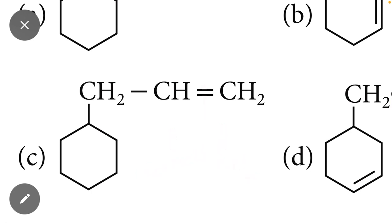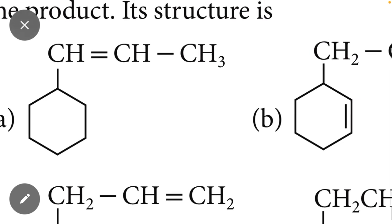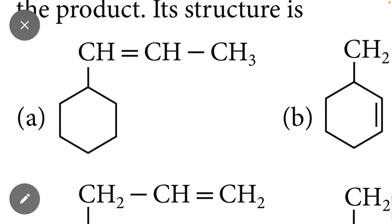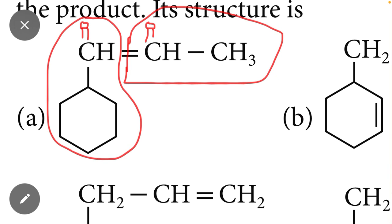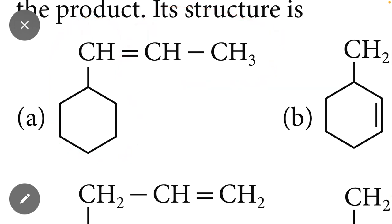I will give you another example of the ozonolysis trick. Here we break that bond, and after breaking it, we add a double bond O on this side and similarly on the other side. One product will be this molecule and the other product will be that molecule. In this way you can easily identify the final products of an ozonolysis reaction.